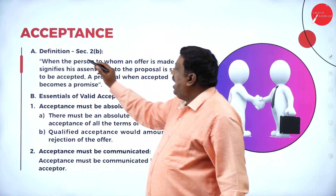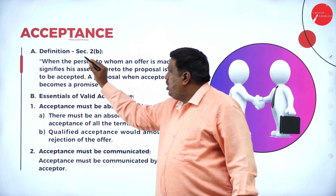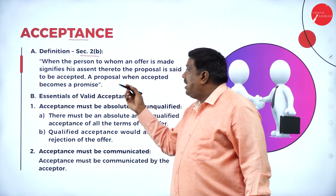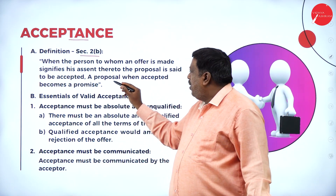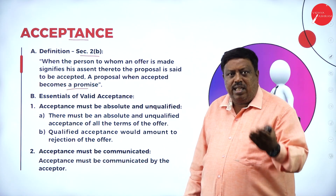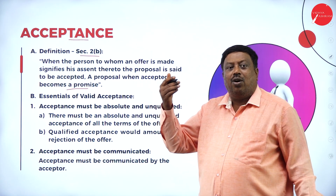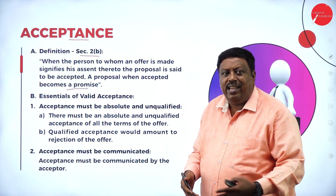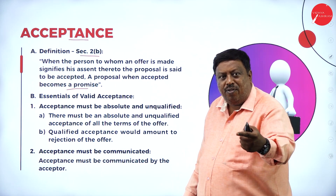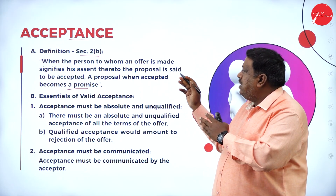The first concept is acceptance. Under Indian Contract Act, ICA 1872, Section 2, Sub-clause B, it says that when the person to whom an offer is made signifies assent to the proposal, it is said to be accepted. A proposal when accepted becomes a promise. When I am offering certain things to you, if you say that you agree to purchase the product or agree to the offer I have made, then it is called acceptance. When you accept the offer I have made, it becomes a promise. This is the concept under Section 2, Sub-clause B.